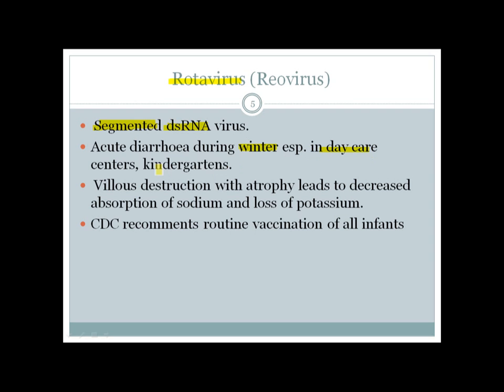Rotavirus first infects the villi, causing destruction and atrophy of the villus. This leads to decreased absorption of sodium and potassium, causing loss of electrolytes, dehydration, and electrolyte imbalance. That is why the CDC recommends routine vaccination of all infants.